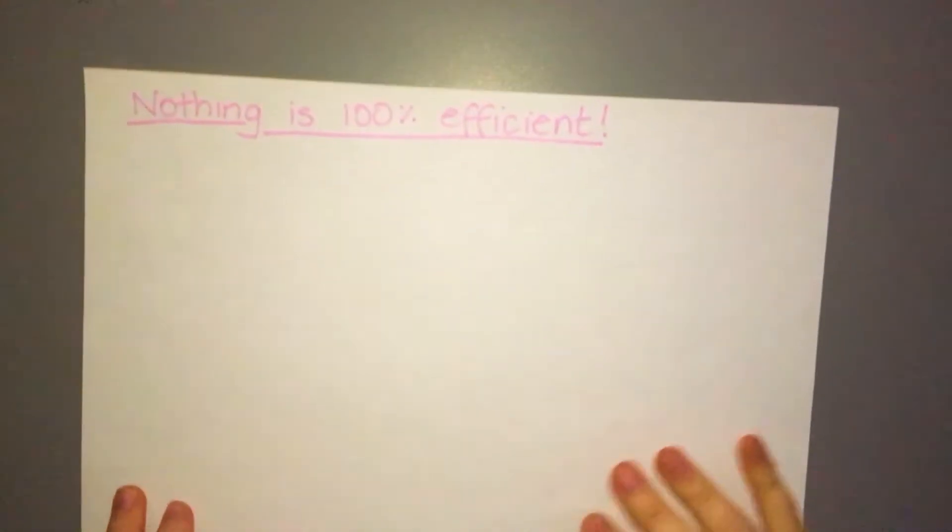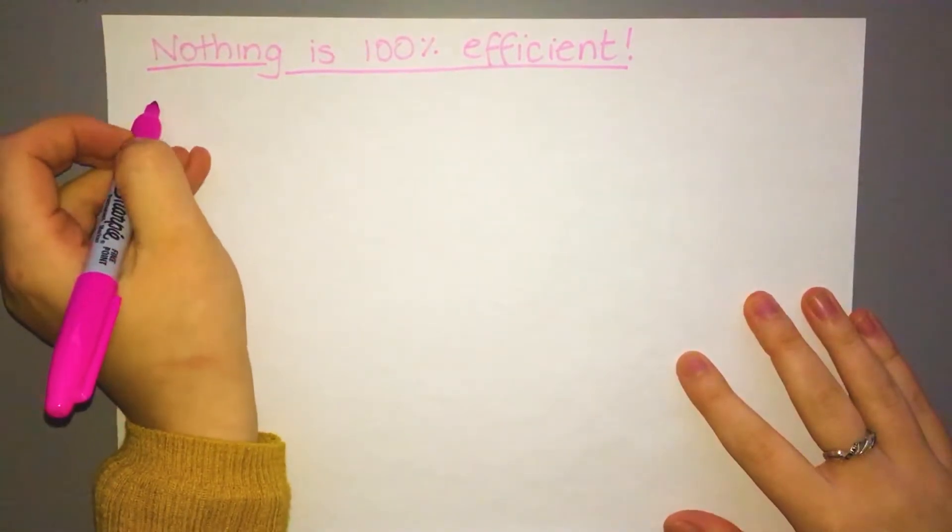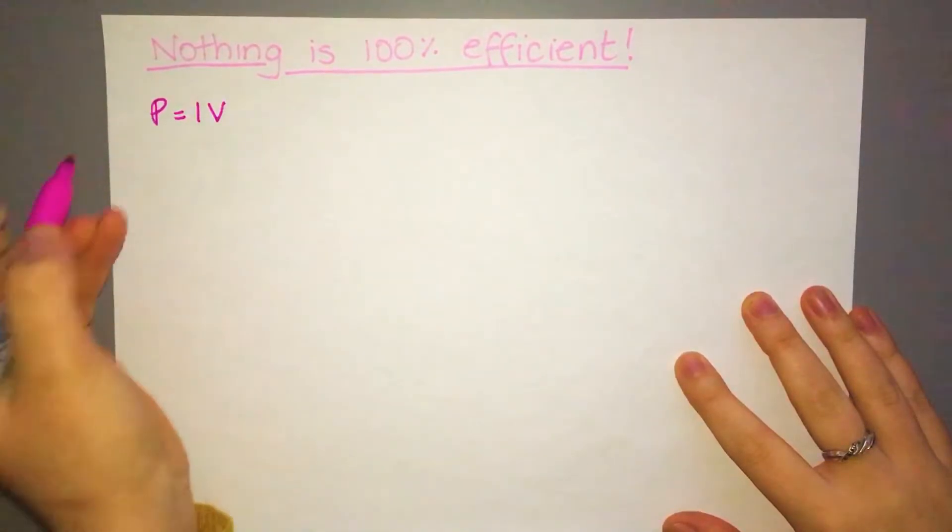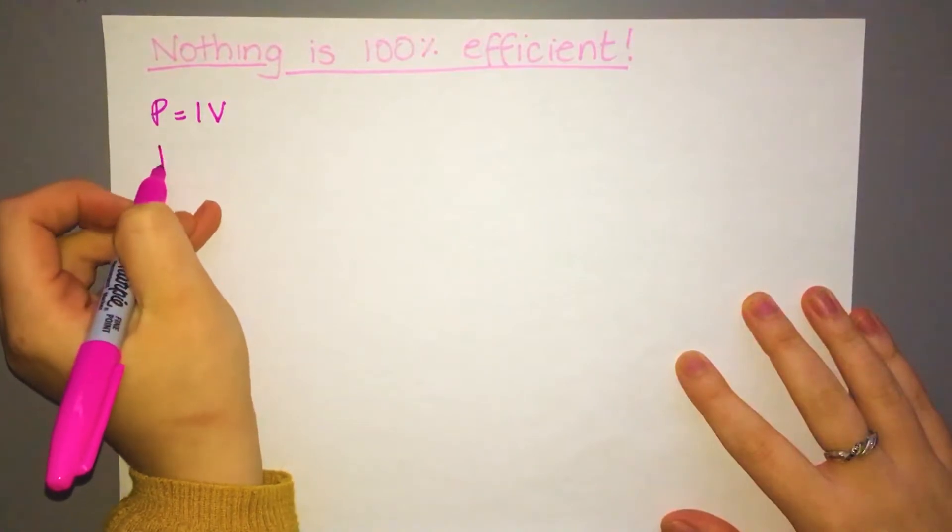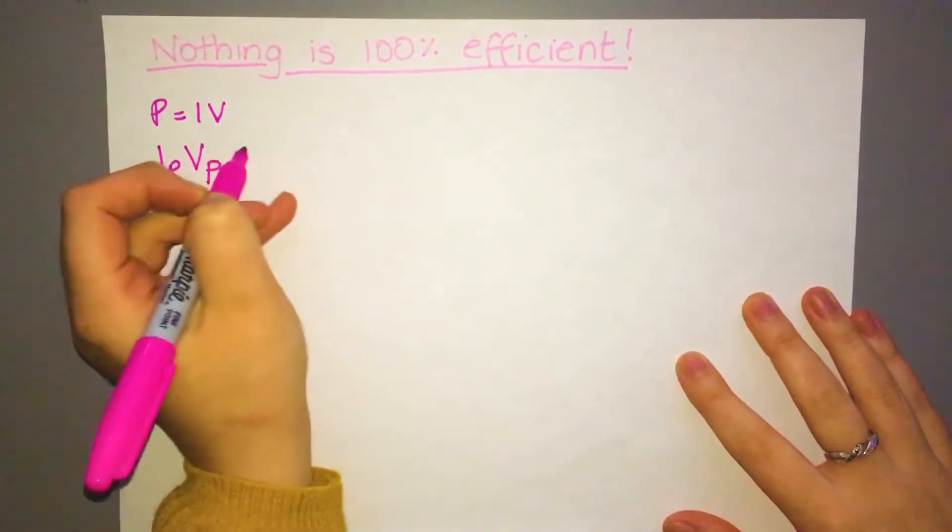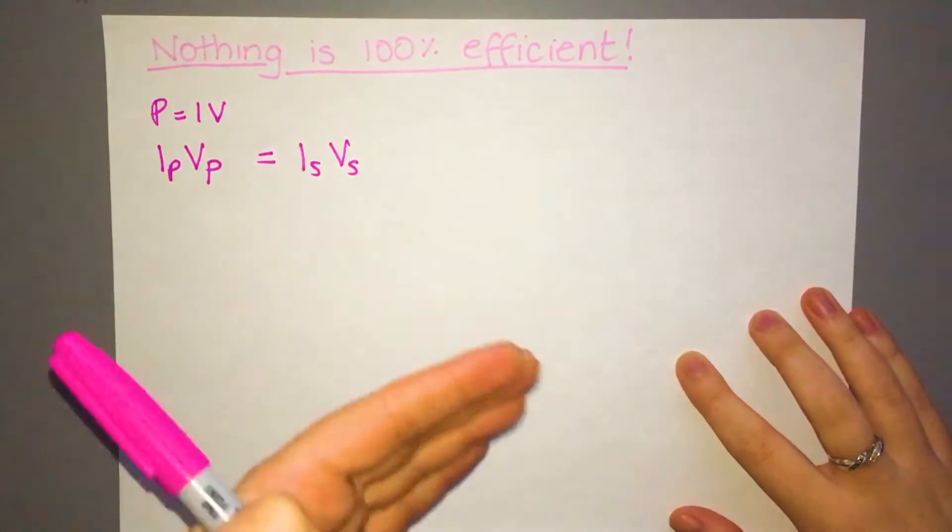Now as mentioned before, nothing is 100% efficient. If we could make things 100% efficient then that would be amazing. We wouldn't need to worry about any energy loss in anything, but it's not. But if it was 100% efficient we would consider that power going in to our transformer would equal the power that's coming out of our transformer. So using the power equation, you know P is IV, so power going in equals power coming out. So we would have power in primary and power coming out in the secondary.